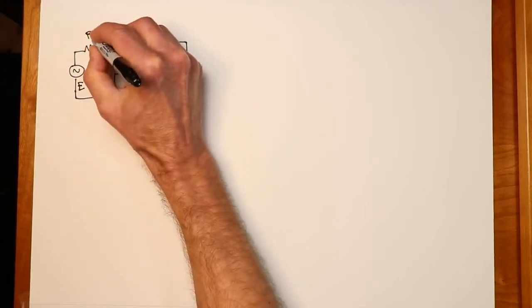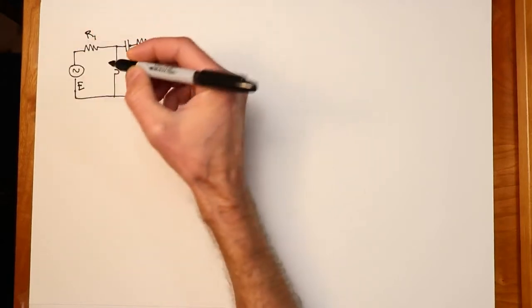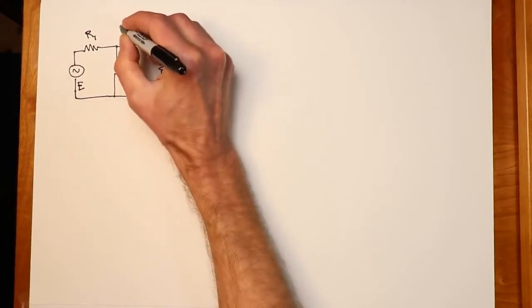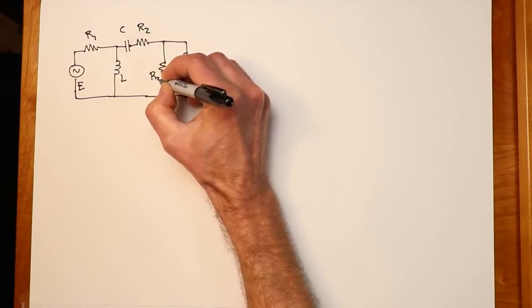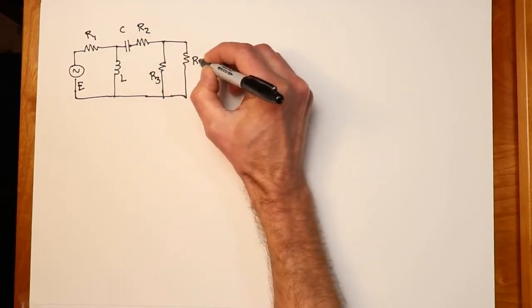Alright, so this resistor out here is sort of the item of interest. Anyway, we have a source back here, E, and I'll just label these running through as R1, R2, and so forth. L, C, R2, R3. Then we have R4.